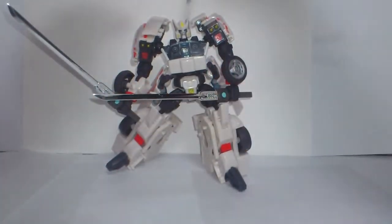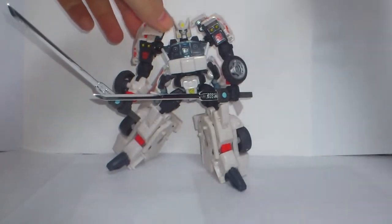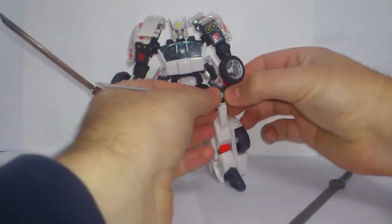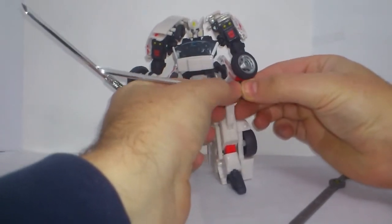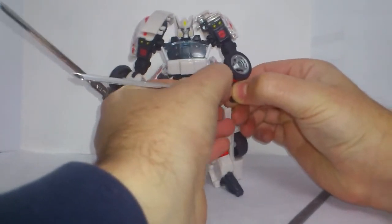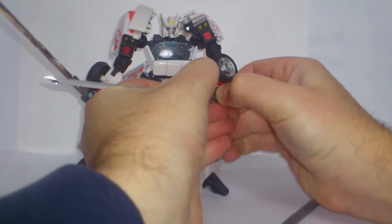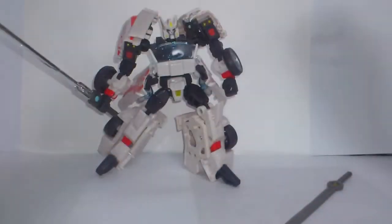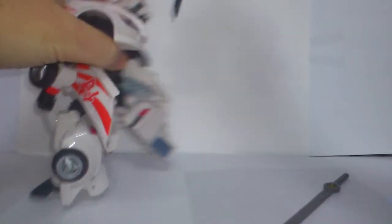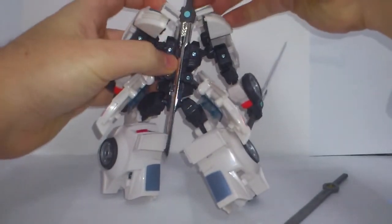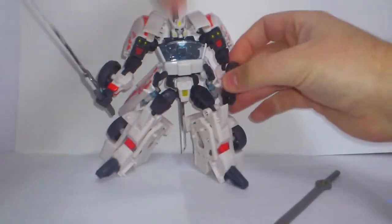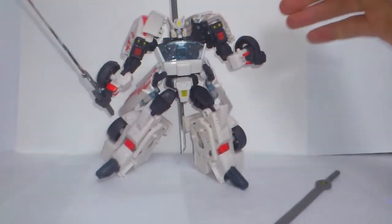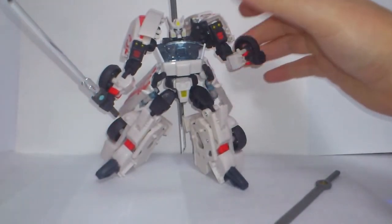And you take the other one and you just slide it just like before, and it stays on his back like this, and he is ready to slice and dice.